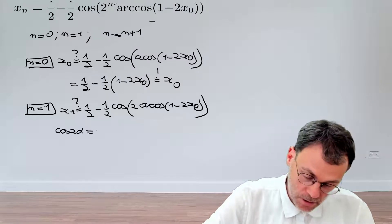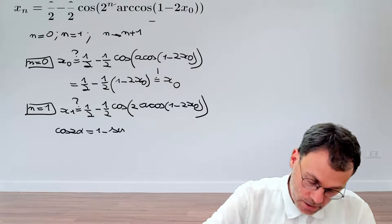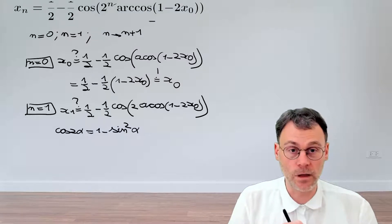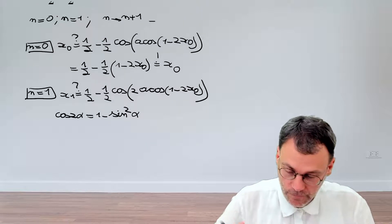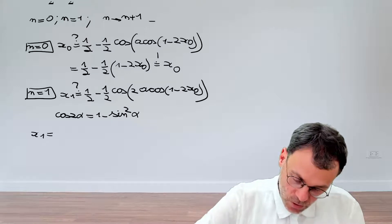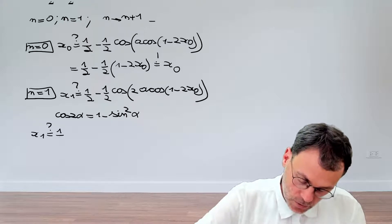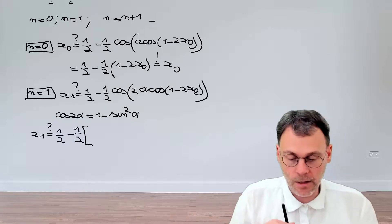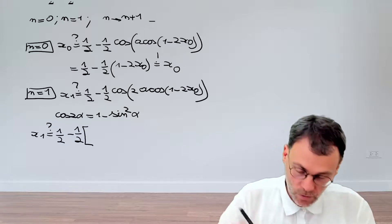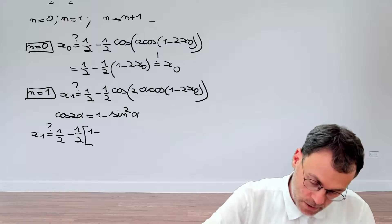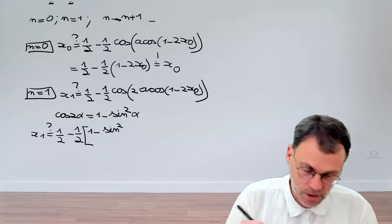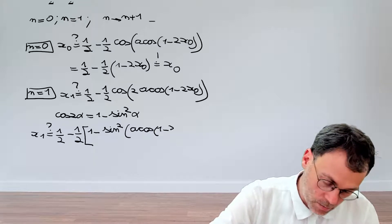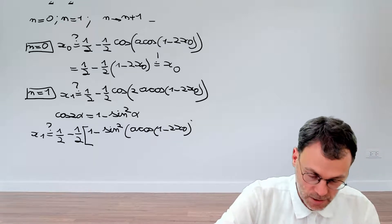However, we have the formula from trigonometry that cosine of two times alpha equals one minus two sine squared of alpha. So we still need to show that x₁ equals one half minus one half, and then cosine of two alpha is replaced by one minus two sine squared of half the angle, which is arc cosine of one minus two x₀.